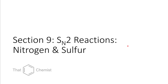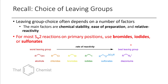Today we're talking about SN2 reactions of nitrogen and sulfur. When choosing a leaving group, you want to use something like a bromide, iodide, or sulfonate. Occasionally we can use chlorides if we have a really good nucleophile, or in cases like benzylic, allylic, or propargylic chlorides. But for the most part you'll just use bromides, iodides, and sulfonates.